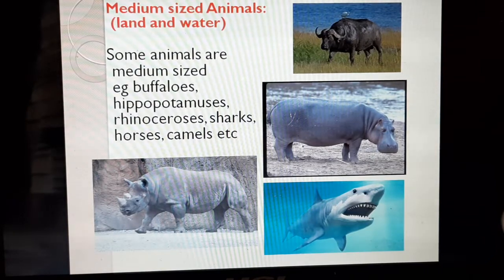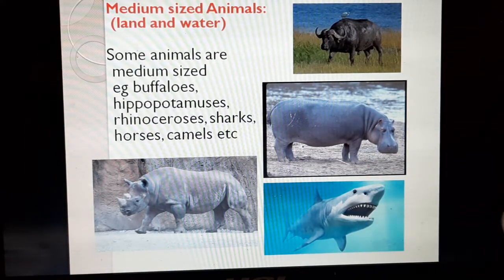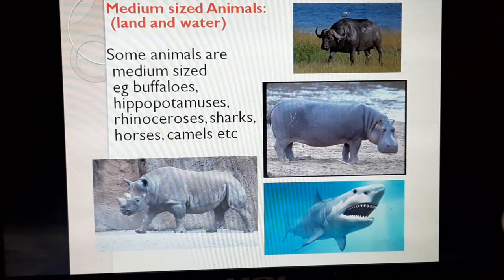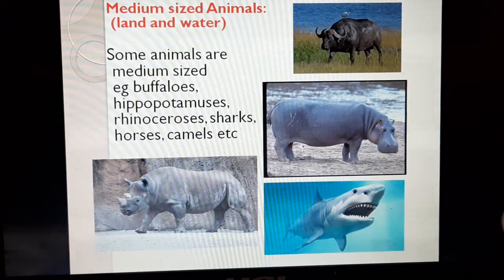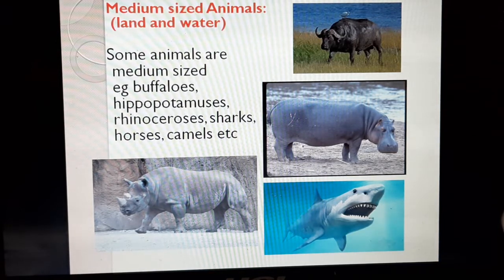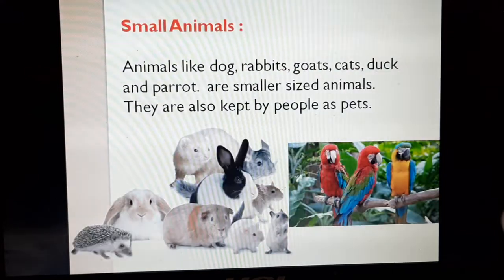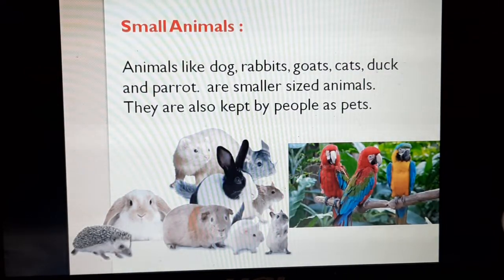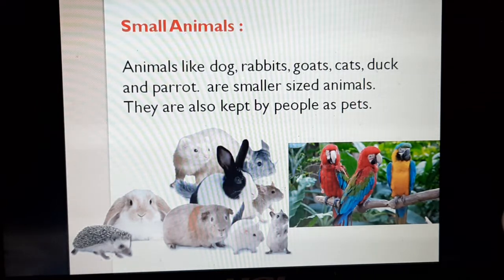Medium-sized animals are buffaloes, hippopotamus, rhinoceros, sharks, horses, and camels. Some animals live on land and some live in water. Small animals include dogs, rabbits, goats, cats, ducks, and parrots.